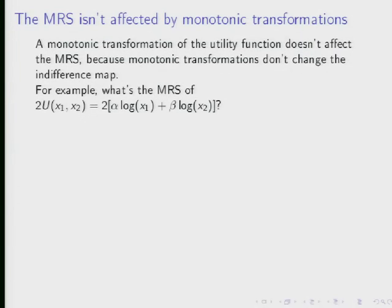Do you remember what the marginal rate of substitution was for this case? Without the two? That's right. For the case where we have U(x1,x2) equal to alpha log x1 plus beta log x2, we have a marginal rate of substitution which was just equal to alpha over beta times x2 over x1. So that was our earlier result.